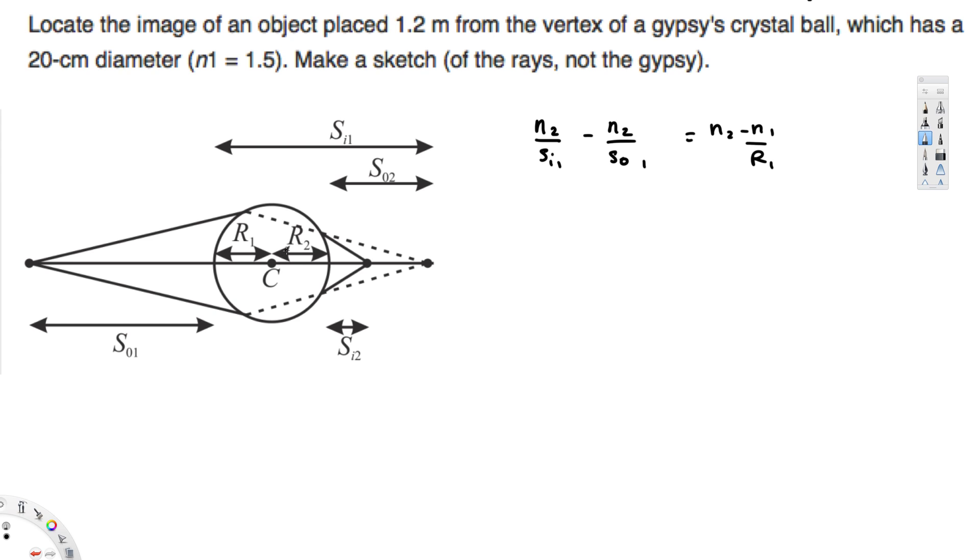Now let's go ahead and plug the values in this equation here. They have given the diameter, right? The object is placed 1.2 meters and the diameter is 20 centimeters. So if the diameter is 20 centimeters, then radius is going to be half of this value. In meters that's going to be 0.2 meters, and therefore radius is going to be 0.1 meters.